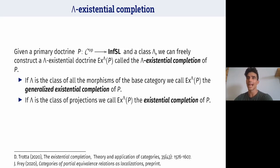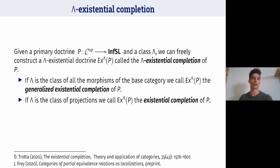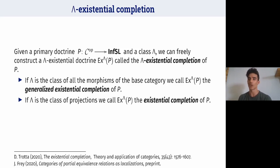In a previous work I introduced the notion of lambda-existential completion, a free construction that, given a class lambda and a primary doctrine, produces a doctrine which is lambda-existential — called the lambda-existential completion of doctrine P. If lambda is the class of all morphisms of the base category, we call this the generalized existential completion of P; if lambda is the class of projections, we call it the existential completion of P.